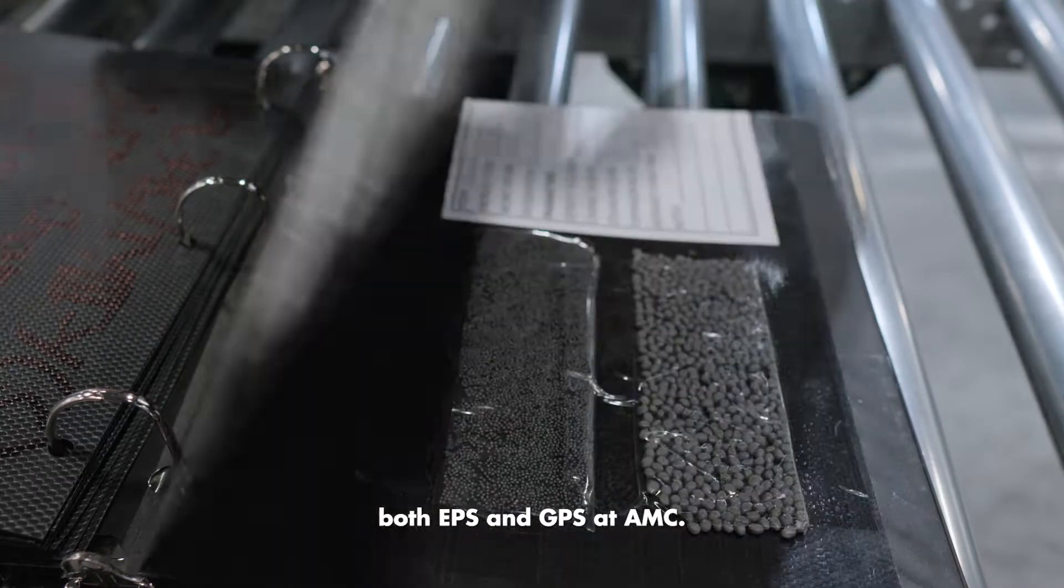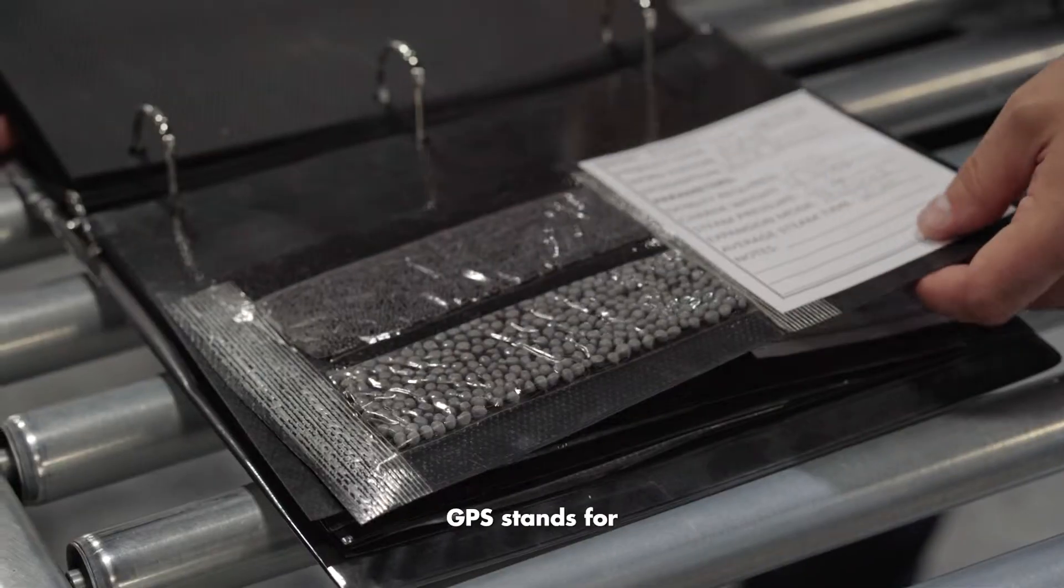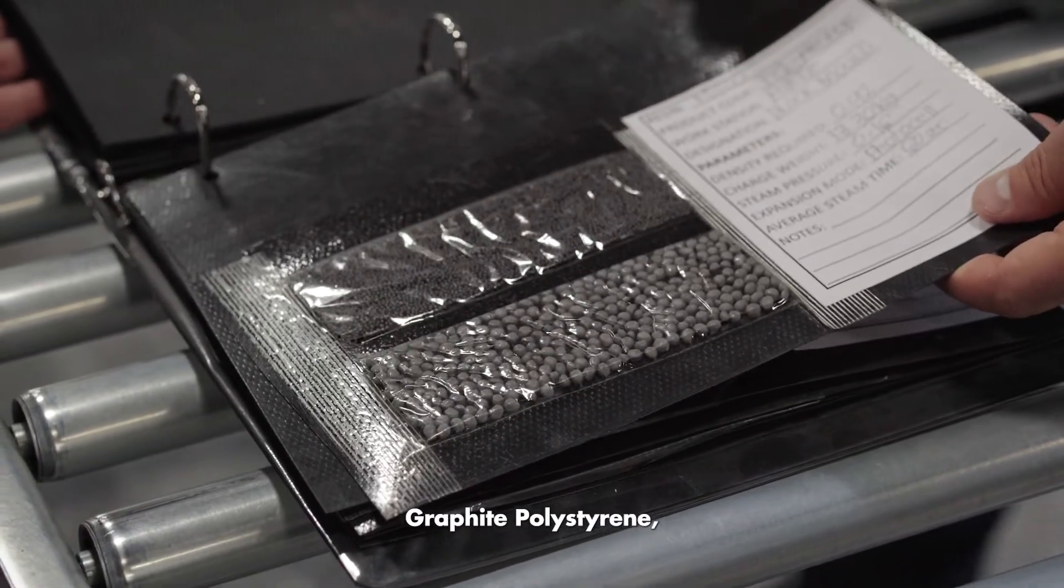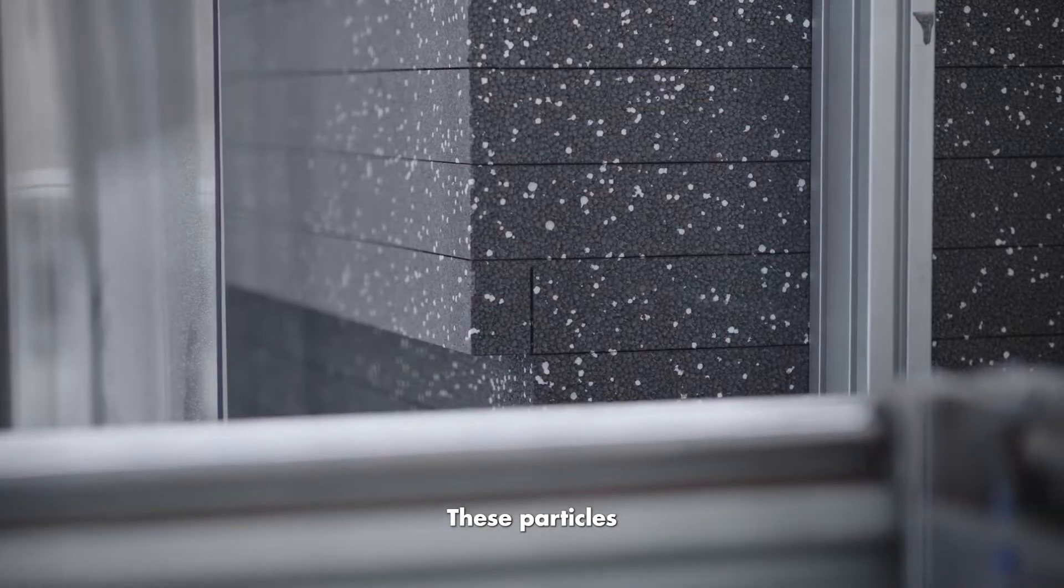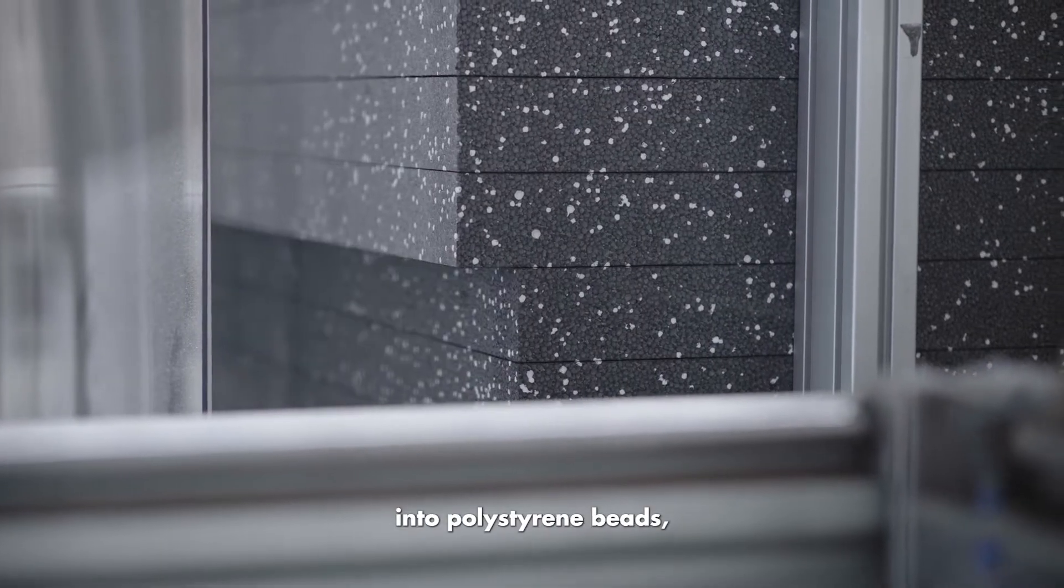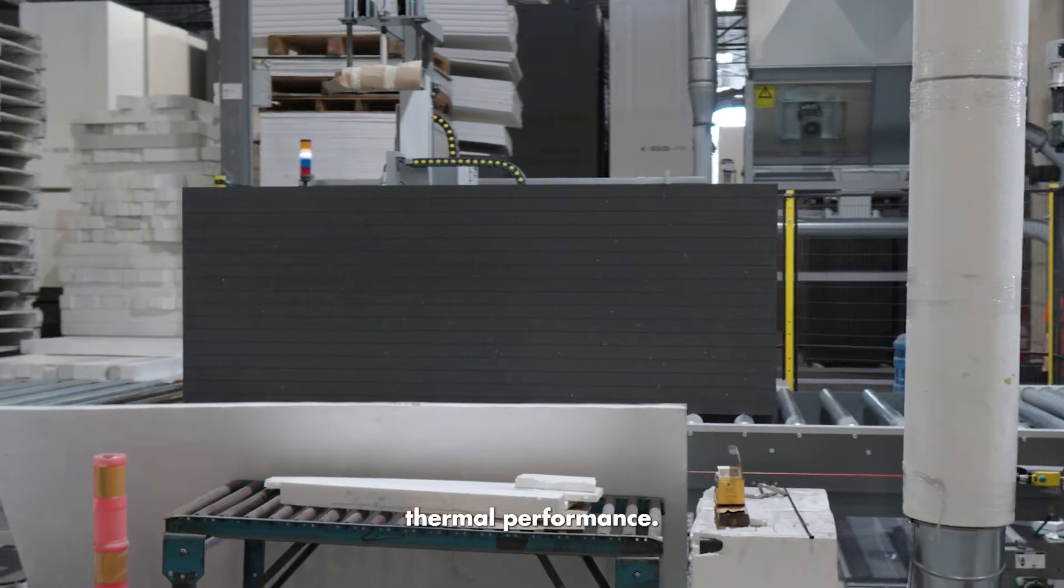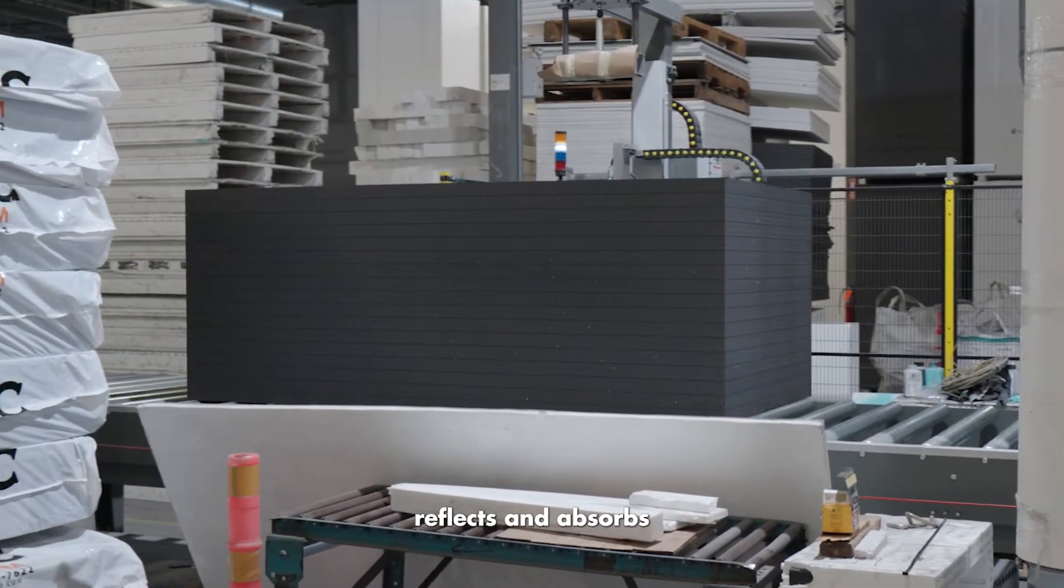We utilize both EPS and GPS at AMC. GPS stands for graphite polystyrene, which is essentially EPS with the addition of graphite particles. These particles are infused into polystyrene beads, enhancing their thermal performance. The graphite reflects and absorbs radiant heat, significantly improving the performance of the end product.